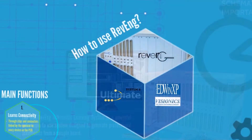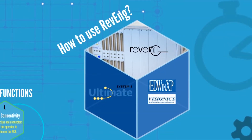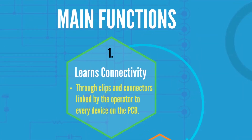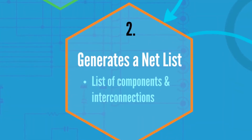We are going to show now how REVENGE works. Step 1: REVENGE learns how the devices on a circuit relate to each other by means of test clips, probes, and I/O connectors that need to be attached by the operator to each device on the PCB.